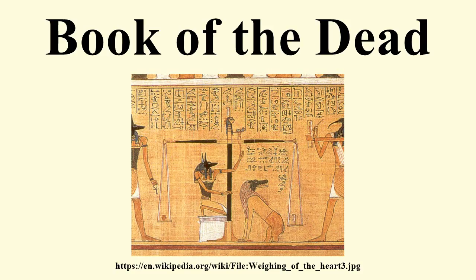The Book of the Dead first developed in Thebes towards the beginning of the Second Intermediate Period, around 1700 BCE. The earliest known occurrence of the spells included in the Book of the Dead is from the coffin of Queen Mentuhotep of the XIII Dynasty, where the new spells were included amongst older texts known from the pyramid texts and coffin texts. Some of the spells introduced at this time claim an older provenance. For instance, the rubric to spell 30B states that it was discovered by Prince Hardjedef in the reign of King Menkaure, many hundreds of years before it is attested in the archaeological record.